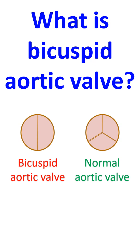Aortopathy can lead to enlargement of the aorta in the long run. This is thought to be due to a weakness in the wall of the aorta. Both aortic regurgitation and stenosis can also progress in severity as age advances.